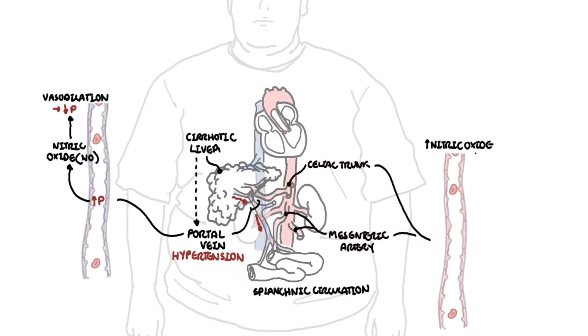Nitric oxide causes vasodilation of the arteries in the splanchnic circulation, and this will decrease total peripheral resistance or the systemic vascular resistance.